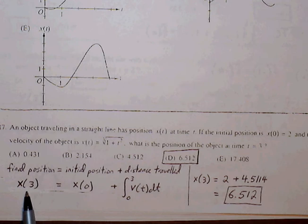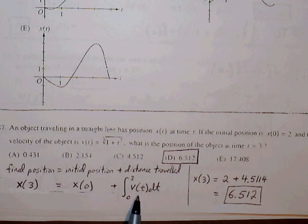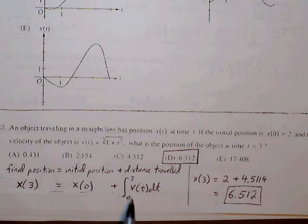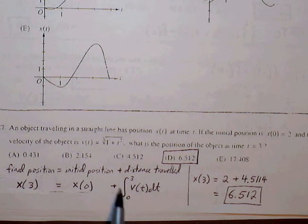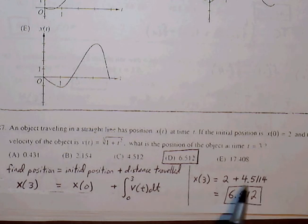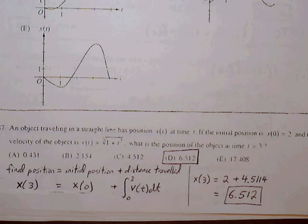So final position is what we're looking for, x sub 3. Initial position is x sub 0. And the distance traveled from 0 to 3 is just going to be the definite integral of v of t from 0 to 3. So all this can go in our calculator. We're going to get 4.5114. Initial position is 2. So 2 plus 4.5114 will give us our final position of 6.512.